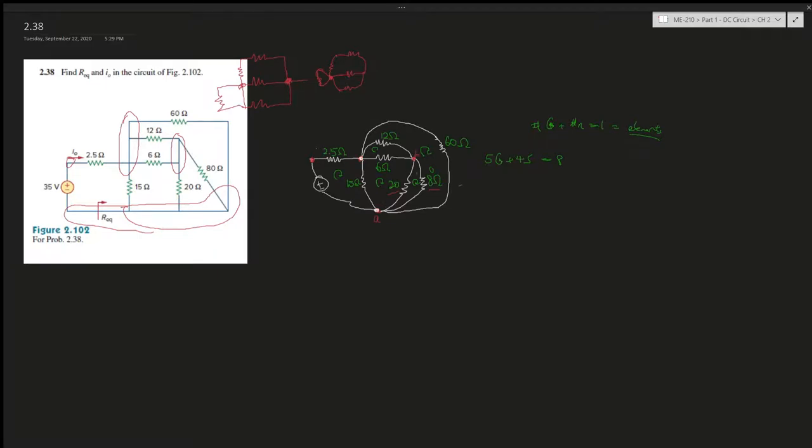For example, this 20 and this 80 share this knot and this knot—let's say knot A and knot B. This 12 and 6 share knot C and B. You see? That means the 12 and 6 are in parallel, and the 20 and 80 are in parallel. So far this is as much as we can simplify. There's no other two resistors that share two knots without having across another element.